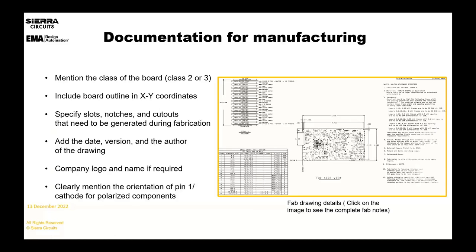The most important element is the IPC spec your board needs to meet. Most people use IPC 6012 class two versus class three. Class three has more requirements that can make manufacturing more difficult. Only specify class three if you actually need class three. If this is a copy-paste of fab notes from a class three to a board that really only needs to be class two, you're doing more harm than good in relaying that information to your fabricator.